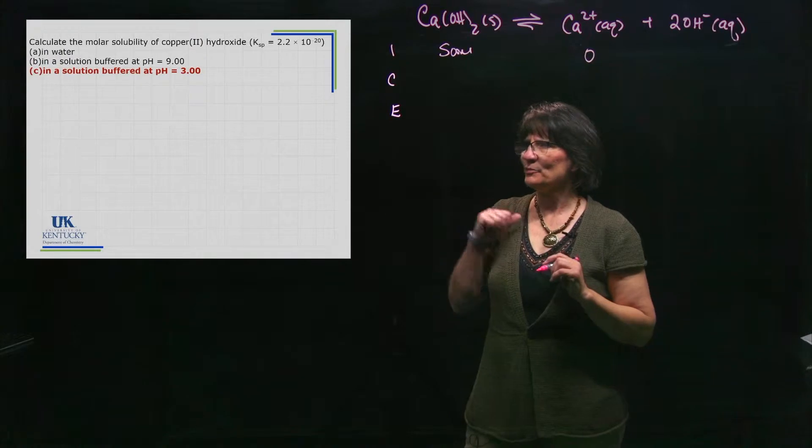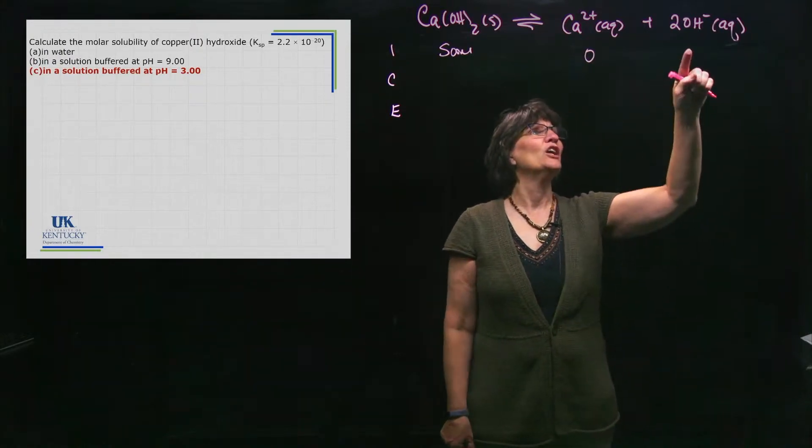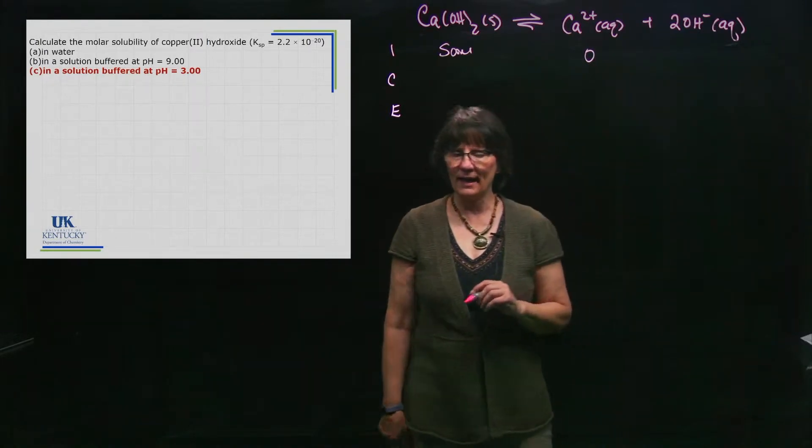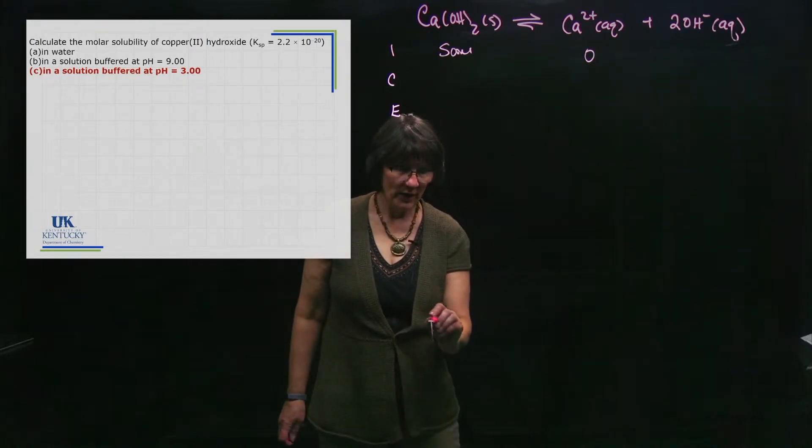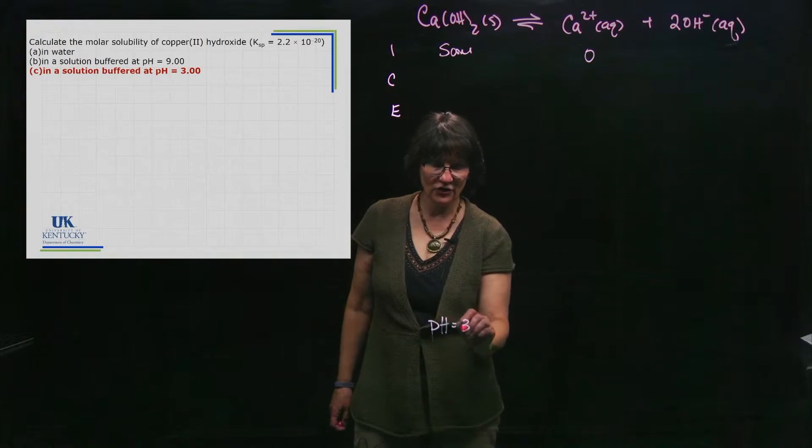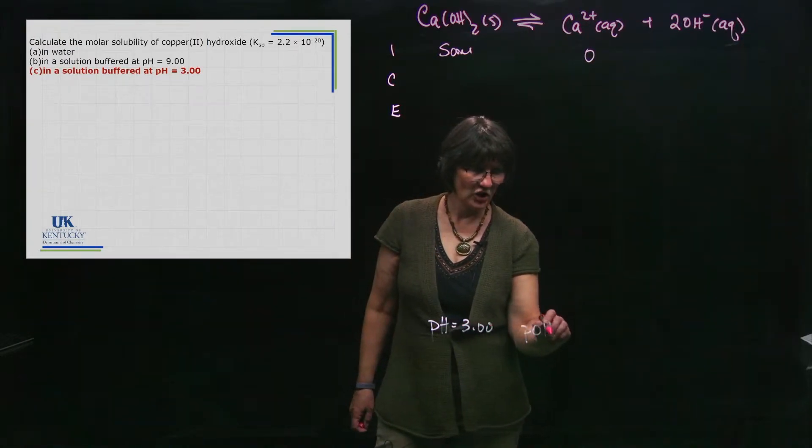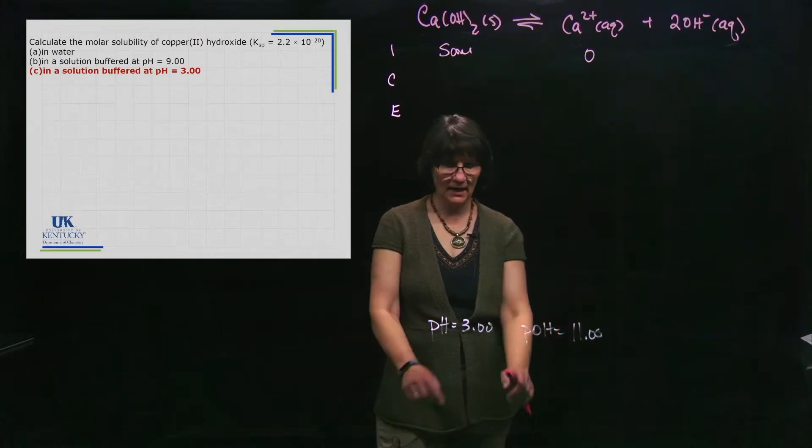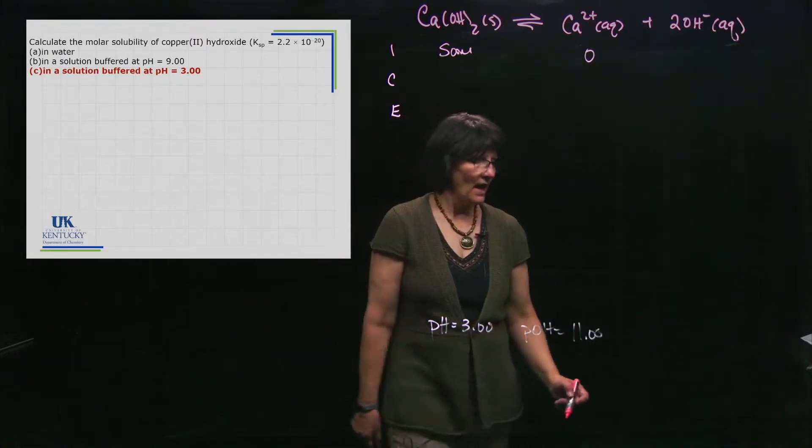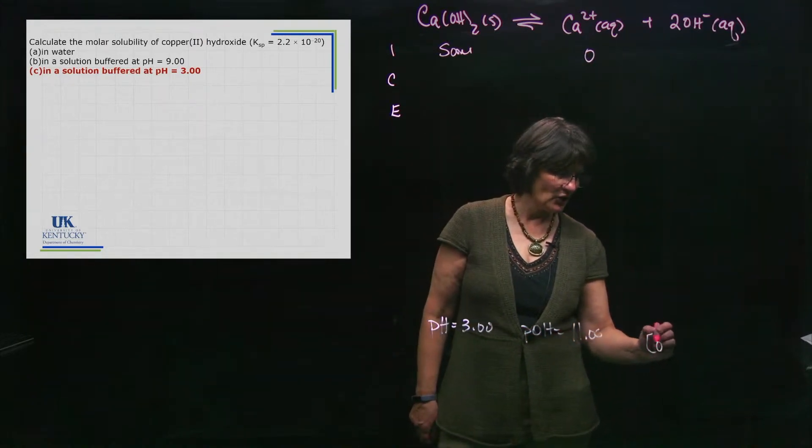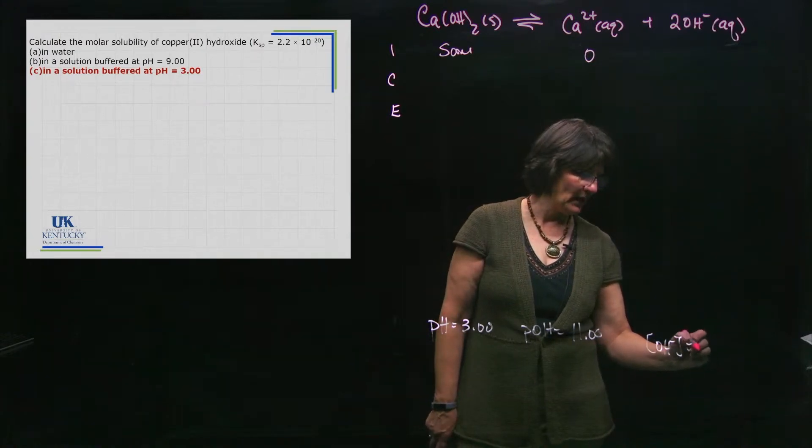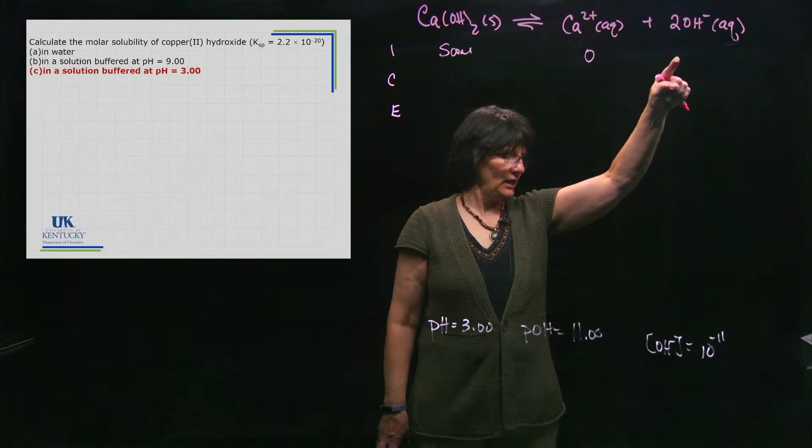There is a hydroxide concentration we can plug in here. How are we going to get that? We know that pH is 3, so pOH must be 11. These two add together to give 14. So the OH⁻ concentration, which the buffer will keep steady, is 10⁻¹¹. We will put in here 1.0 × 10⁻¹¹.